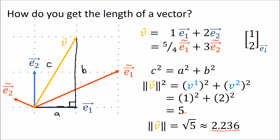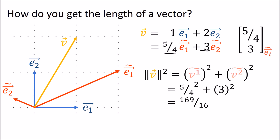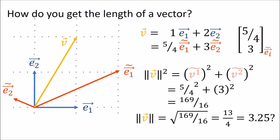So that's computing the length in the old basis. Let's try computing it in the new basis. We can go through the same process using the components in the new basis, which are 5/4 and 3. But applying those to Pythagoras' theorem, we get that the squared length is 169 over 16. And taking the square root of that, we get exactly 3.25.